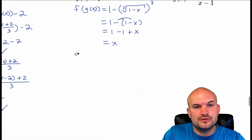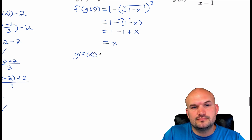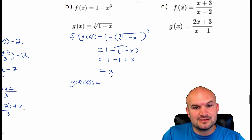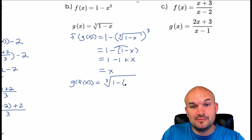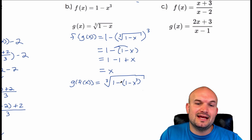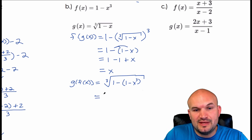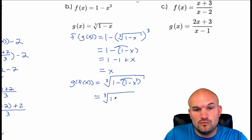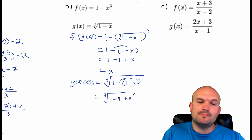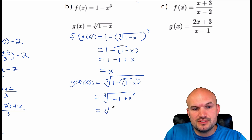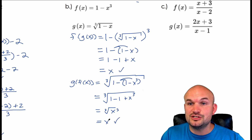Now let's do the other way: g of f of x. I'm going to plug my f of x function into g of x, so I'll have the cube root of one minus, and I'm going to make sure I use parentheses because I am subtracting the quantity. So I'm subtracting the quantity one minus x cubed. Distributing the negative using the distributive property, I have one minus one plus x cubed. One minus one is zero, so I'm just left with the cube root of x cubed, which equals x. Got the identity element for both compositions.